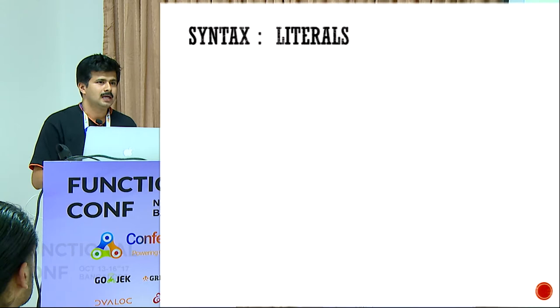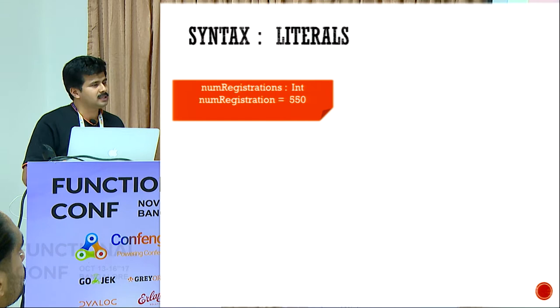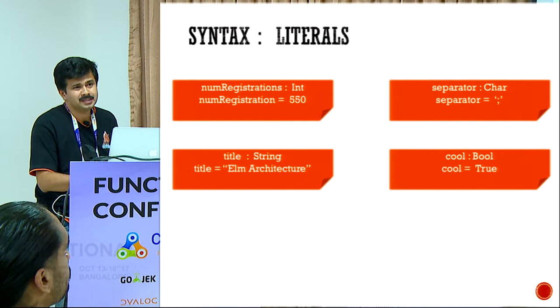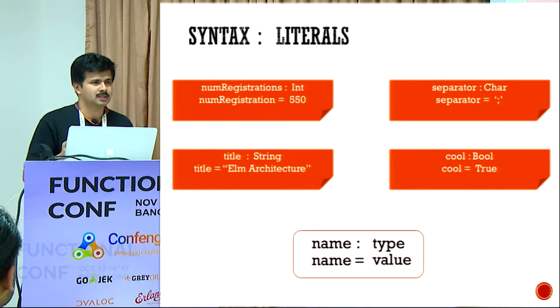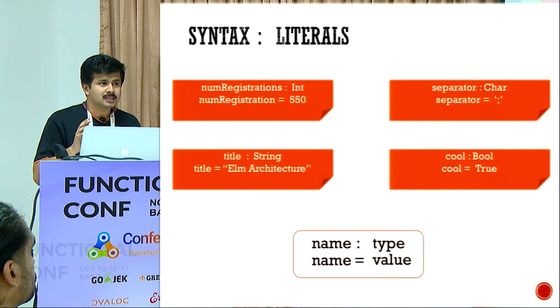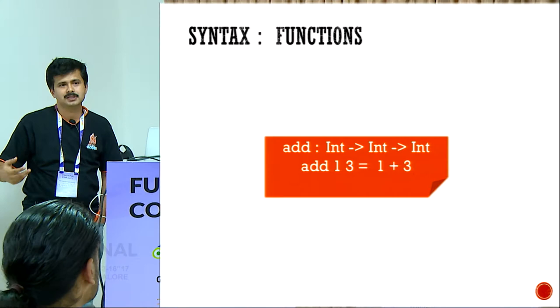I'll start talking about some of the literals — like how you define values. There are four of you who have already done Elm, so for the sake of the rest of us: it's about defining values. You can see how you define an int, char, string, bool. Essentially it's the format: you have a name and a type. So it's defining the type signature and the actual value. These are literals. Now what do you do when you go for functions? It's exactly the same — there is no difference between how you define a literal versus how you define a function.